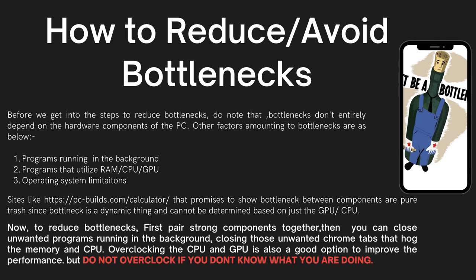To reduce bottlenecks: first, pair strong components together. Then, close unwanted programs running in the background — including those unwanted Chrome tabs that hog memory and CPU. Overclocking the CPU and GPU is also a good option to improve performance, but do not overclock if you don't know what you are doing.